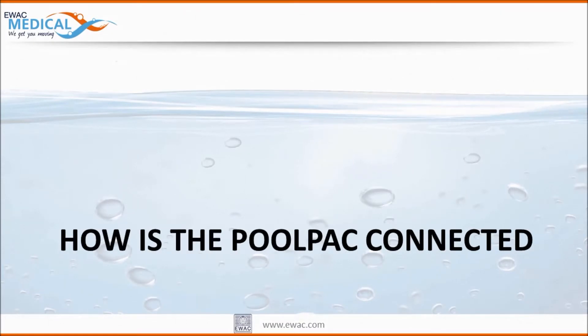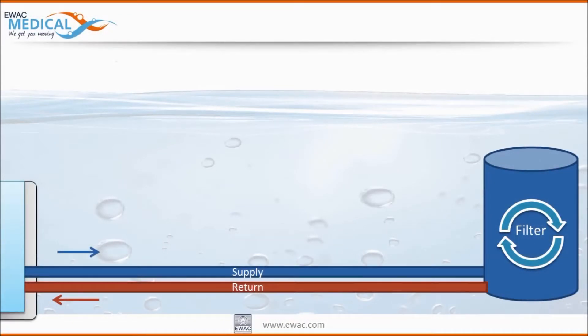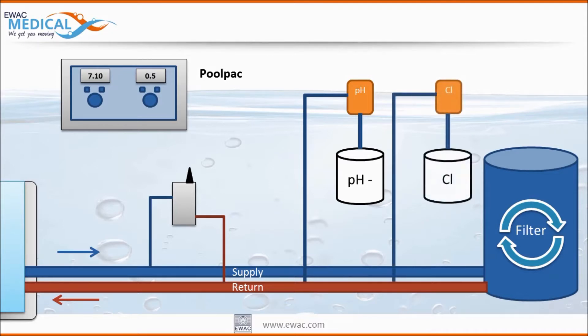Every EWAC medical therapy pool is fitted with a specially designed filtration system which has a supply and return pipe. A measurement device is connected between the supply and return. Mounted right next to the measurement cell is the Pool Pack controlling device. Somewhere in the same technical area we will be able to find a pH dosing pump which is connected to a container with acid and another dosing pump which is connected to a container with a chlorine solution.